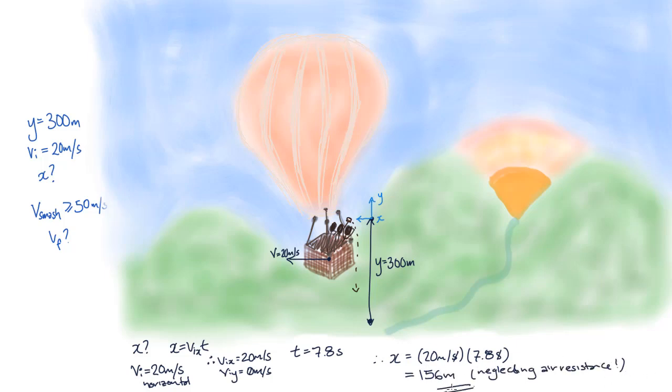We find that you should look for your phone at a horizontal distance of 156 meters from where you were when you dropped the phone.